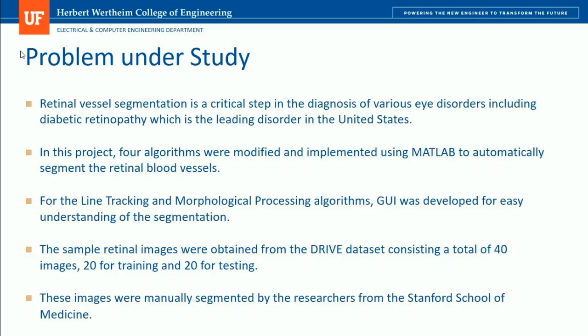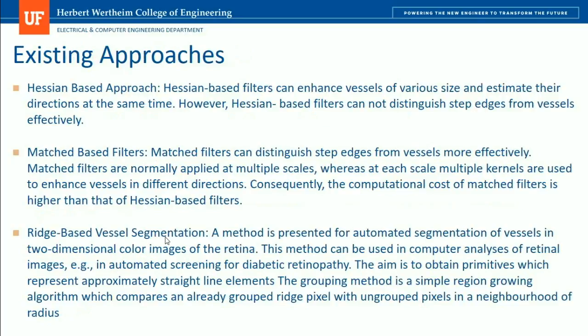A GUI was developed for easy understanding of the segmentation process of the retinal blood vessels. To analyze these retinal images, a dataset was used consisting of 40 images — 20 for training and 20 for testing. These images were obtained from Stanford University and were manually segmented by researchers from the Stanford School of Medicine. Before moving on to the algorithms, let us analyze a few existing approaches.